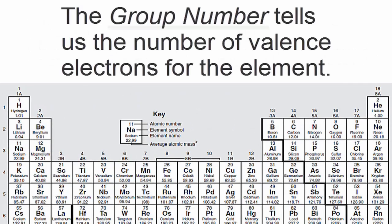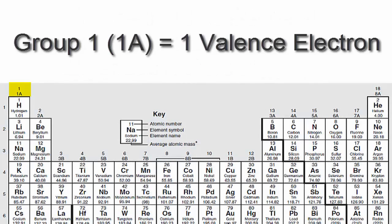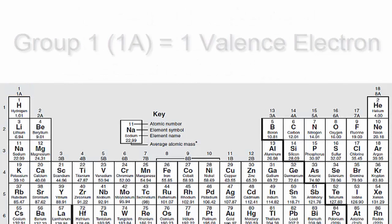We can find the number of valence electrons using the periodic table. The group number tells us the number of valence electrons for the element. For example, hydrogen has one valence electron because it's in group 1, sometimes called 1A.